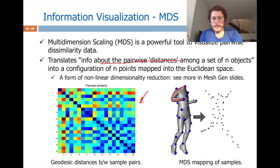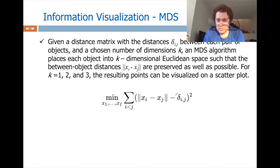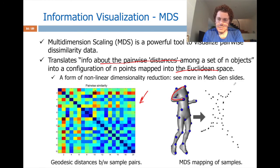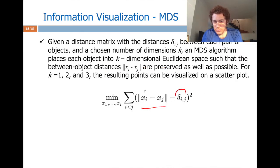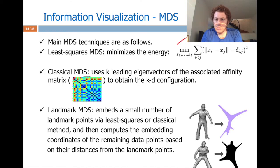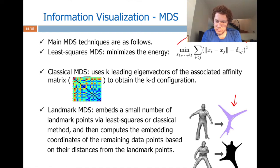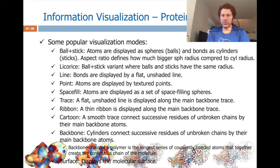Multidimensional Scaling (MDS) translates information about pairwise distances into a configuration of n points embedded in Euclidean space. The output points are positioned so their Euclidean distances closely match the corresponding matrix entries — minimizing a least-squares function. If you use geodesic similarity, then regardless of the pose of the 3D shape, you end up with the same MDS embedding, making it a nice pose-invariant information visualization that removes bendings from your data.